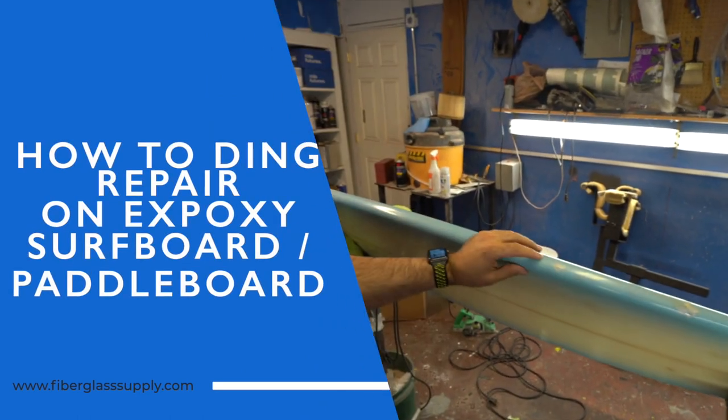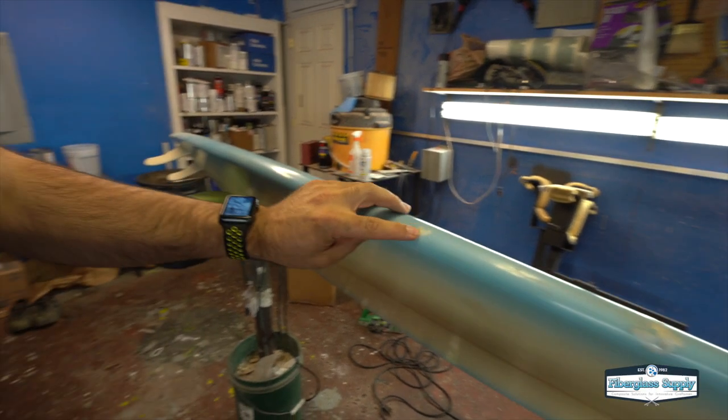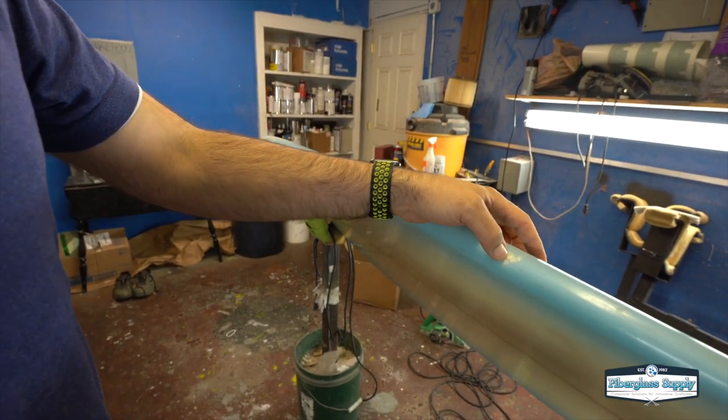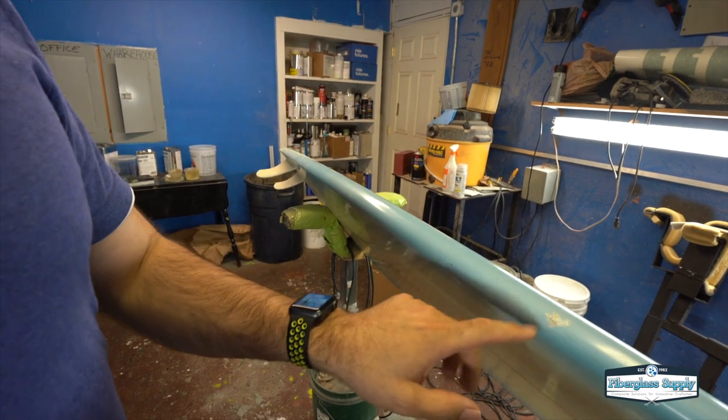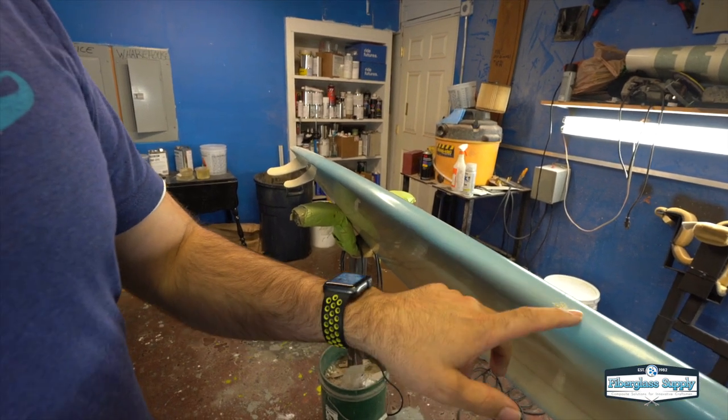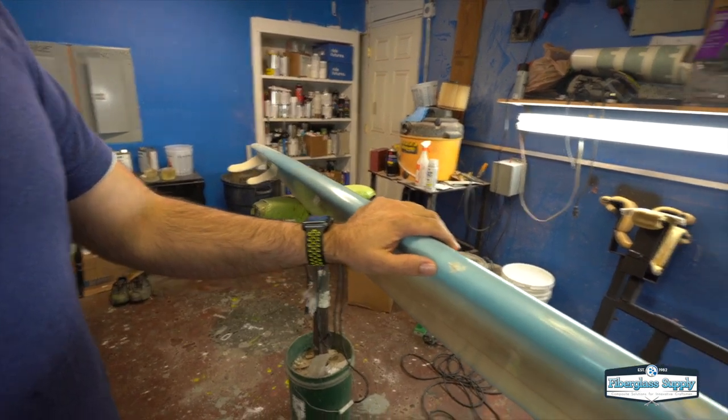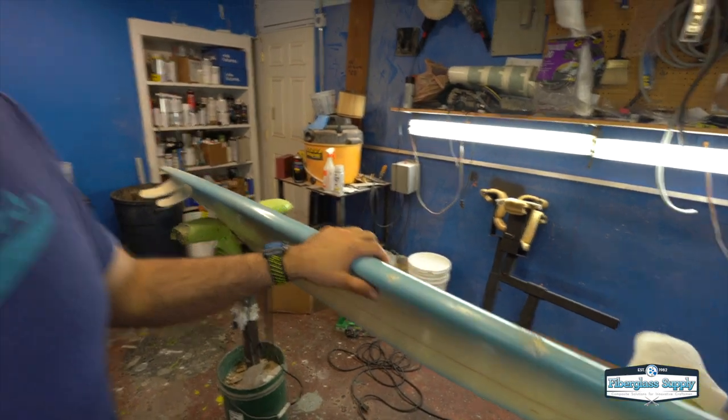It's a similar ding to the ding we have right here on the surfboard where the rail glass has been smashed, but we don't really have an indentation. So we just need to get in there and repair that area and get it back to looking good. And we'll show you how to do that in this video.